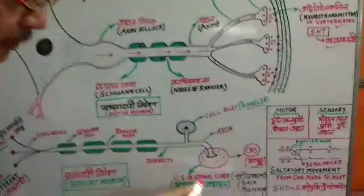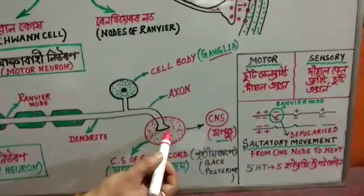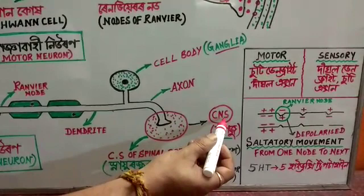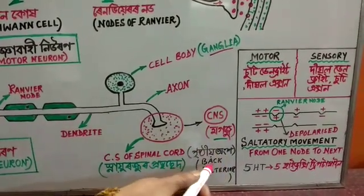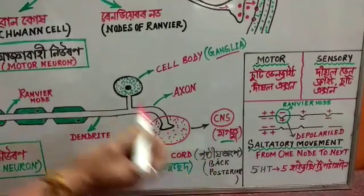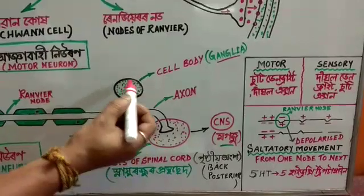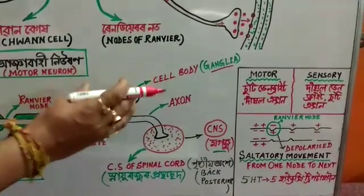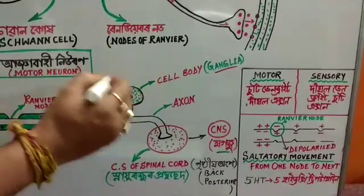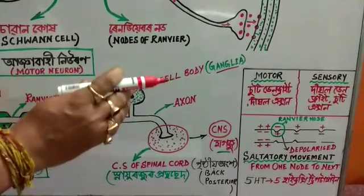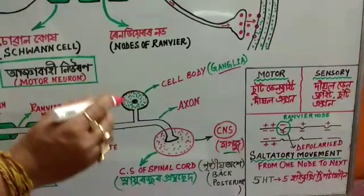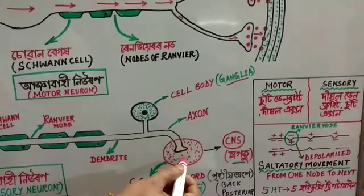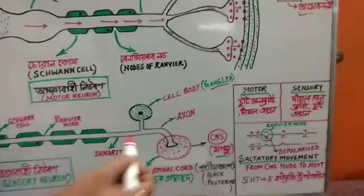If you look at the spinal cord, you can see a bulge-like structure — this is the CNS, the central nervous system, which is the spinal cord. You can see the posterior side. The cell body of many neurons is attached to a particular side, which is called the ganglion. Ganglia feature cell bodies serving a particular body part, and this is how we get the motor and sensory neurons.